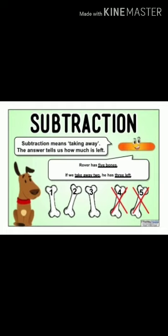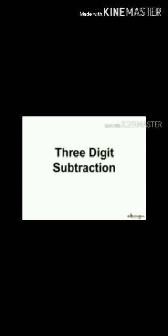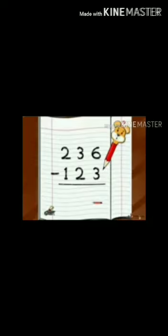Now tell me children how many bones are left with Rover? So you have to take away two bones from five bones. After taking away two bones you will get the answer as three bones. Yes children, Rover has three bones left with them. In this video we are going to learn how to subtract a three digit number from another three digit number.